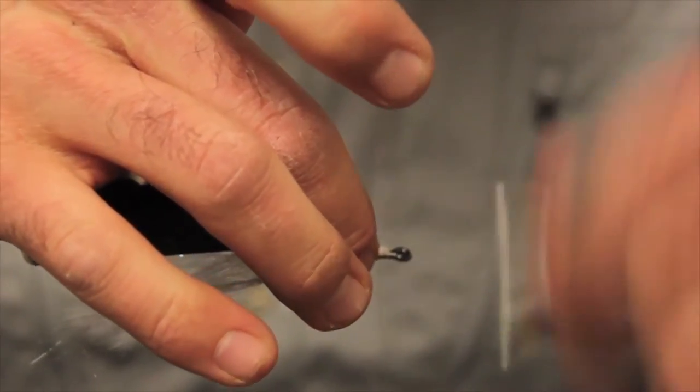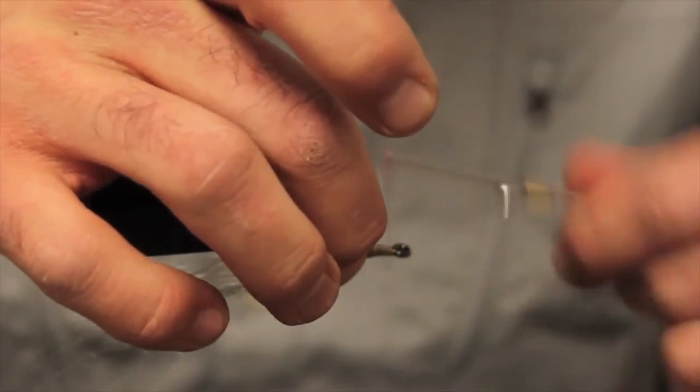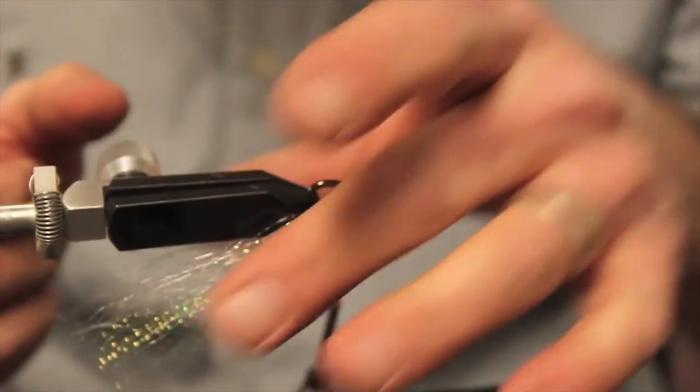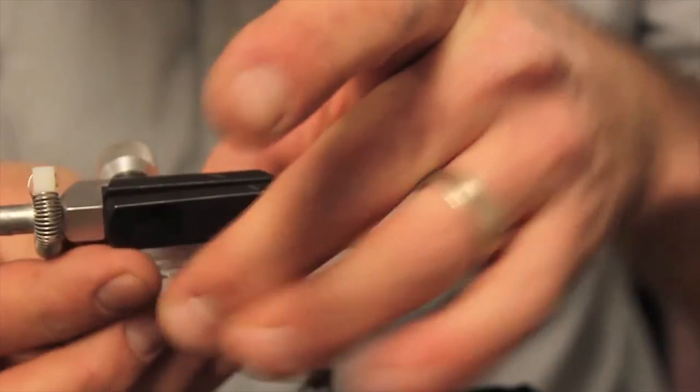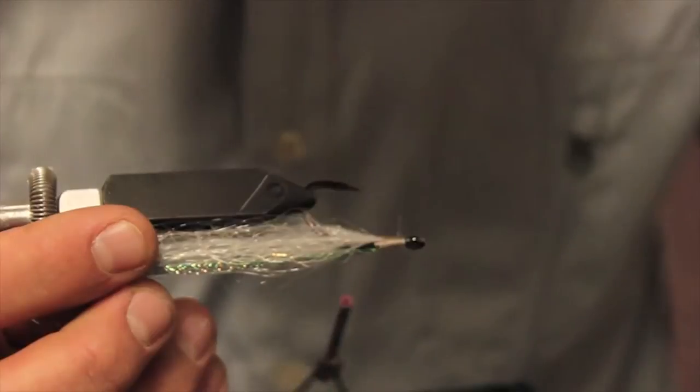And I like to tie it all the way down to the front. Because basically you're starting to build up a head on this fly that you're going to stick your eyes onto. So, that's basically it. Now with this stuff too, I kind of like to pull it a little bit tight right there.